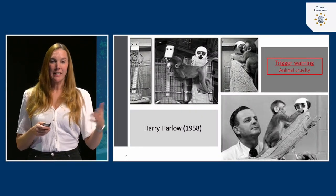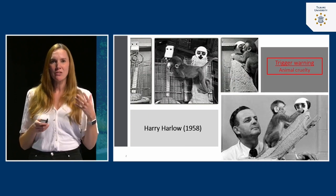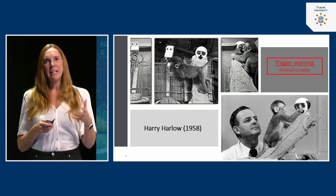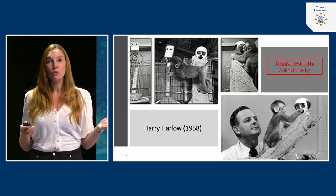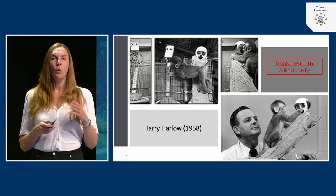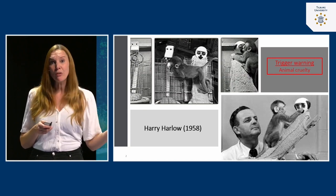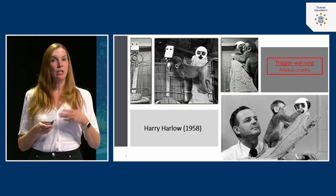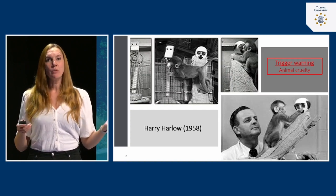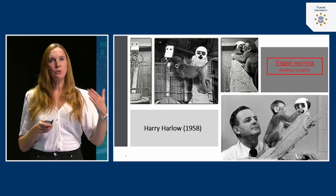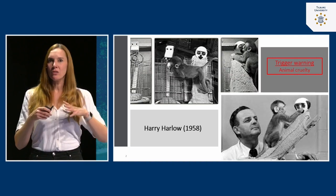As you can see in this video fragment, these experiments were done to show that comfort is at least as important as providing food. Later on, there were more experiments in which baby monkeys grew up without any surrogate mother at all — no cloth mother provided. What Harry Harlow then showed was even more disturbing: these baby monkeys became out of control. They showed very inappropriate behavior, also inappropriate sexual behavior, became very aggressive, and never really became socialized.